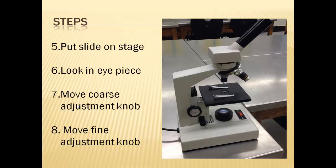The next step we want to do is once we have that set up, we want to put the slide on the stage. We want to then look through the eyepiece. And we want to move the coarse adjustment knob, which is the big knob. That's going to slowly move the stage down so that we can actually start to see the image in our field of view.